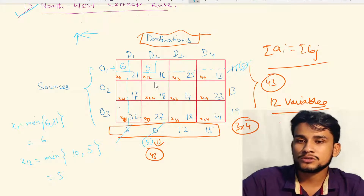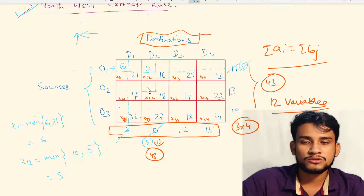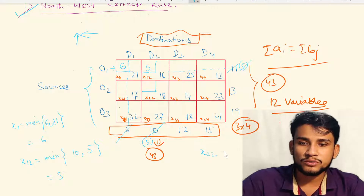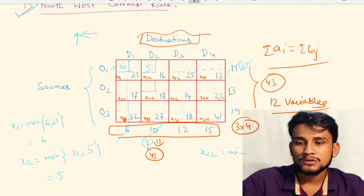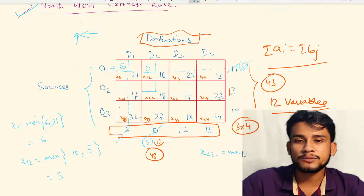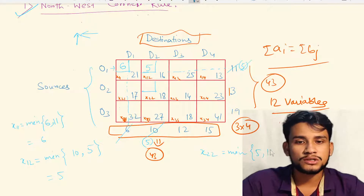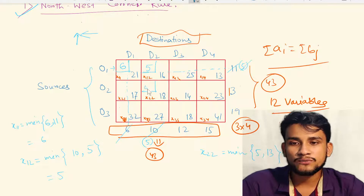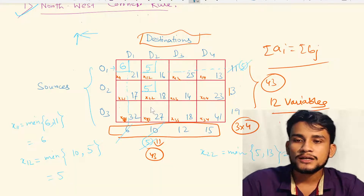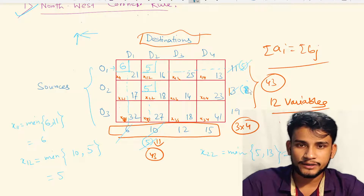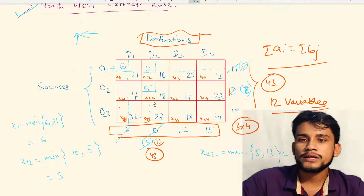The next northmost and westmost cell is x22. x22 = minimum(remaining demand of D2, supply of O2) = minimum(5, 13) = 5. We write 5 here. The demand of D2 is now completed. The remaining supply from O2 is 13 − 5 = 8 units.